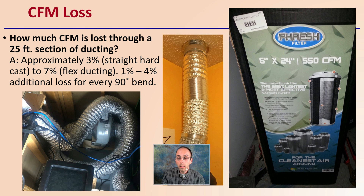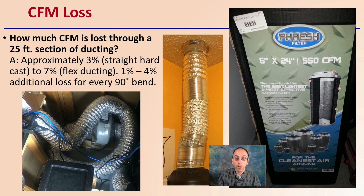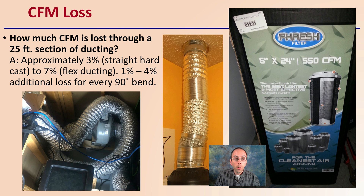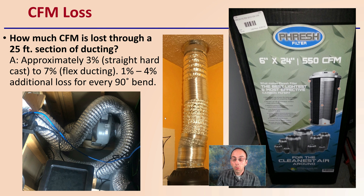We also need to consider CFM loss, meaning everything's not perfect. How much CFM is lost through a 25-foot section of ducting? Approximately 3% if it's straight hard casting, or up to 7% if it's flexible ducting. There's also an additional 1% to 4% loss for every 90-degree bend. Ideally, straight hard casting is the most efficient way to move air. If you use flexible ducting, which is great for installation, you lose about that 3% to 7%, and you want to minimize the number of 90-degree bends.